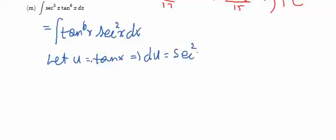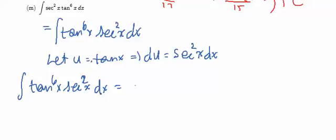So that's du, this is u to the 6th. So then the integral of tan to the 6th x sec squared x dx becomes the integral of u to the 6th du.